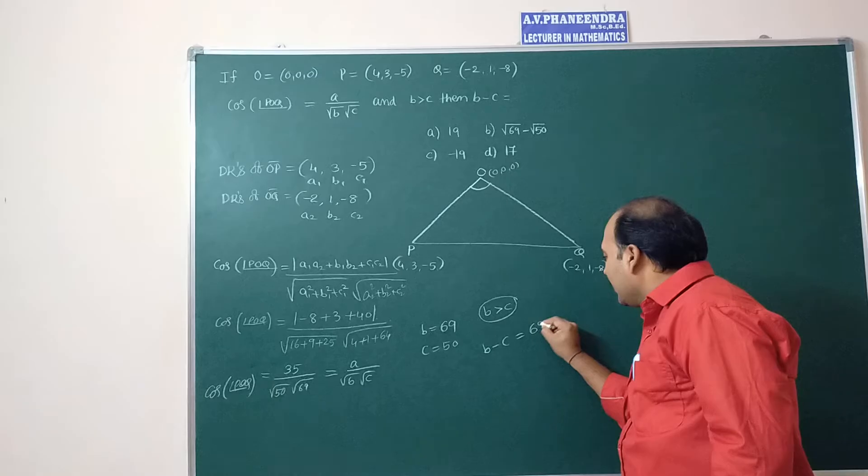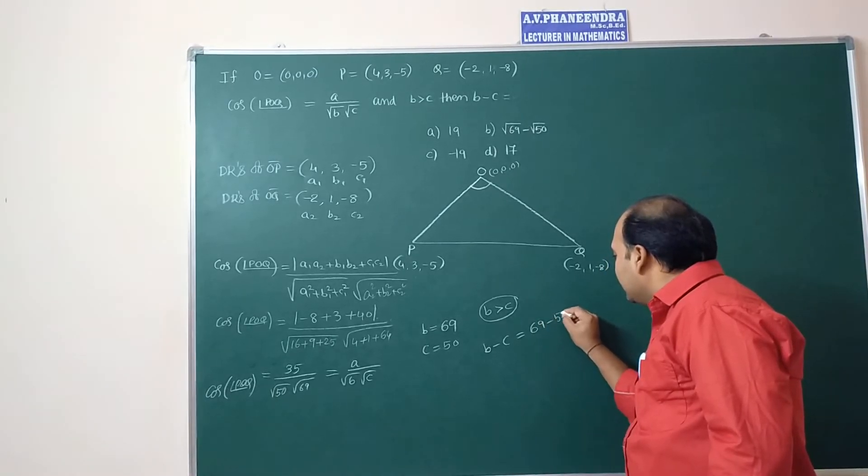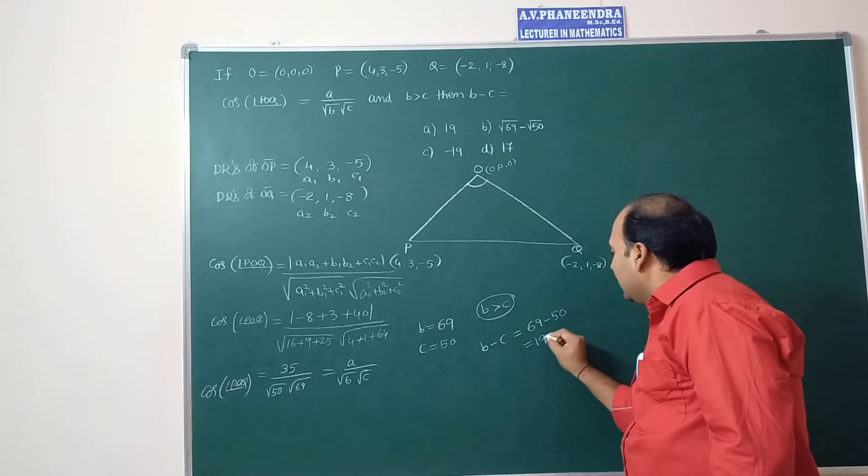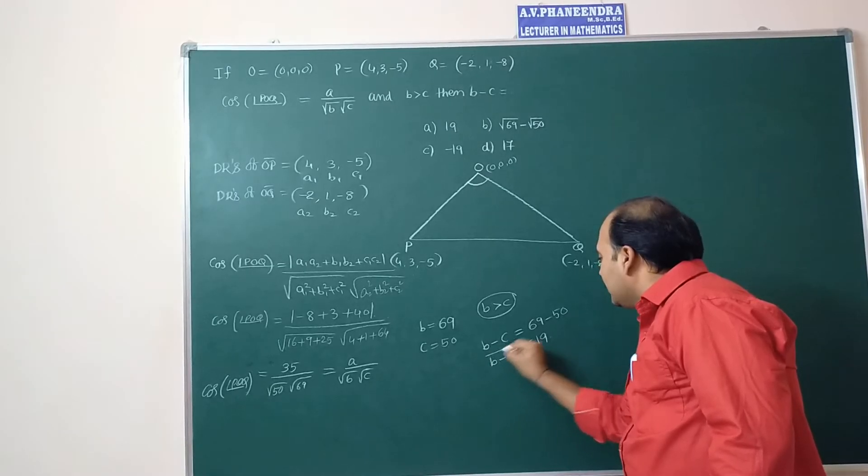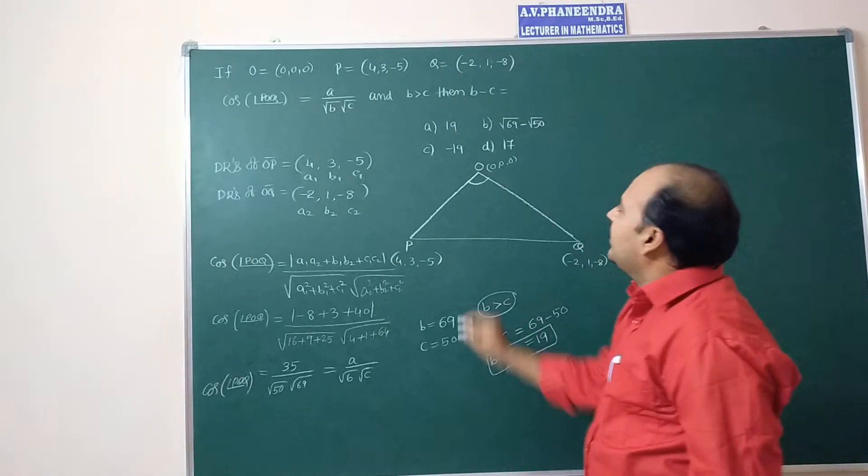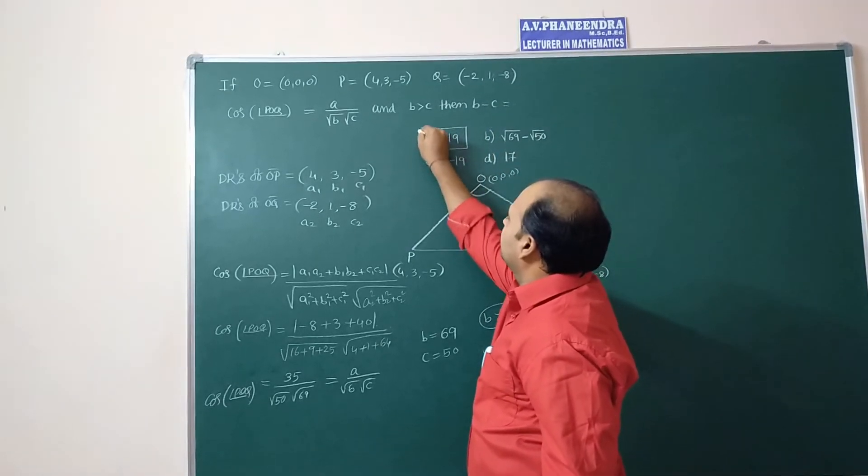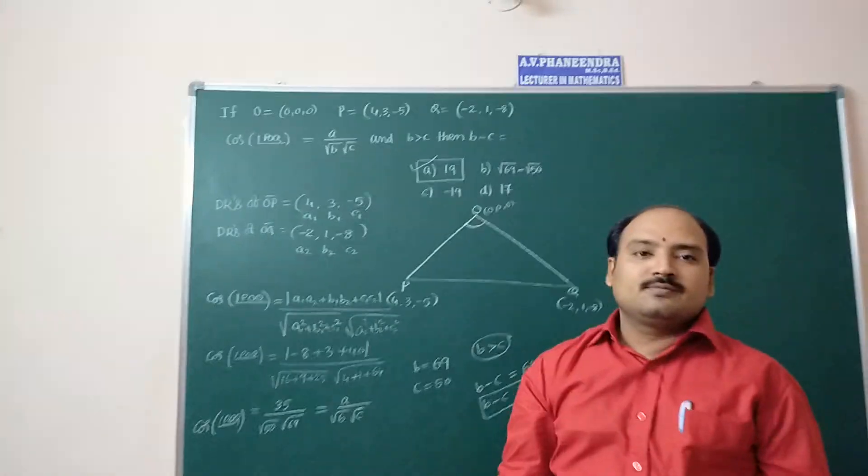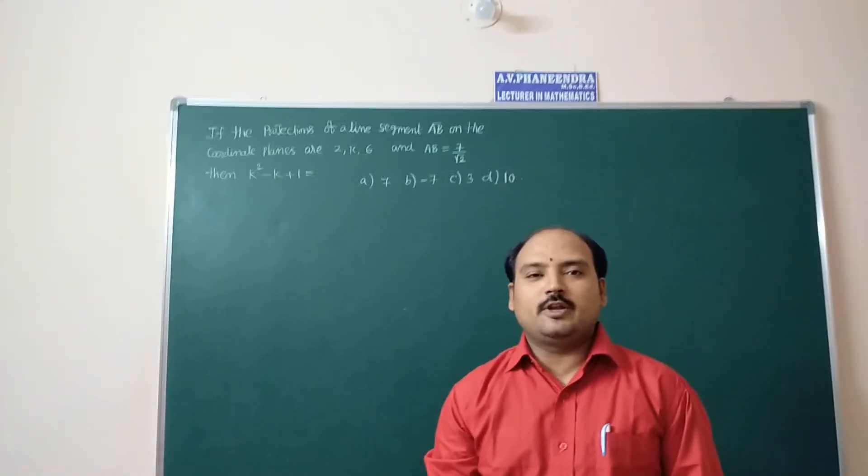So b minus c value is equal to 19 which is there in the first option. Next question.